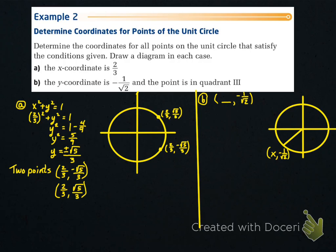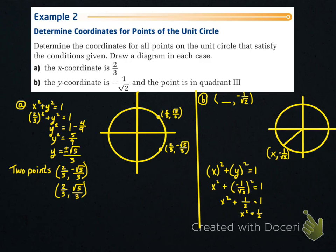For part b, the y-coordinate is -1/√2 and the point is in quadrant 3. Plugging into the unit circle: x² + (-1/√2)² = 1, so x² + 1/2 = 1, meaning x² = 1/2. Thus x = ±1/√2, but since we're in the third quadrant, x must be negative.